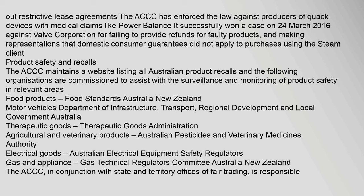The ACCC maintains a website listing all Australian product recalls. The following organisations are commissioned to assist with the surveillance and monitoring of product safety in relevant areas: Food Products — Food Standards Australia New Zealand; Motor Vehicles — Department of Infrastructure, Transport, Regional Development and Local Government; Therapeutic Goods — Therapeutic Goods Administration; Agricultural and Veterinary Products — Australian Pesticides and Veterinary Medicines Authority; Electrical Goods — Australian Electrical Equipment Safety Regulators; Gas and Appliances — Gas Technical Regulators Committee Australia New Zealand.